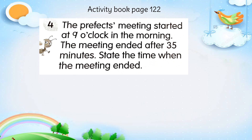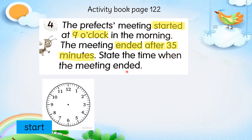Number four. The prefects' meeting started at 9 o'clock in the morning — mesyuarat pengawas bermula, start bermula pada pukul 9 pagi. The meeting ended after 35 minutes — mesyuarat itu berakhir selepas 35 minit. State the time when the meeting ended — kita nak cari pada pukul berapakah mesyuarat itu berakhir. Start at 9 o'clock — saya lukiskan hour hand and minute hand menunjukkan 9 o'clock.